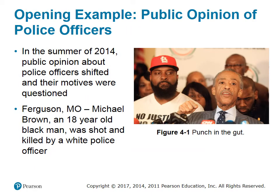Opening example: public opinion of police officers. In the summer of 2014, public opinion about police officers shifted and their motives were questioned. In Ferguson, Missouri, Michael Brown, an 18-year-old black man, was shot and killed by a white police officer. Ferguson became the symbol of police brutality and racism, and the public opinion of police across the nation took a major hit.